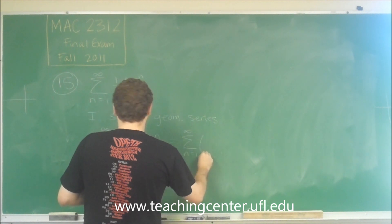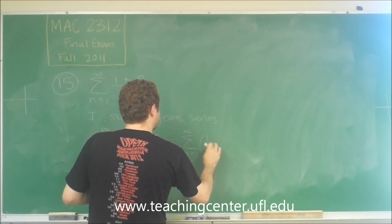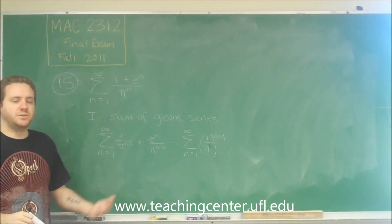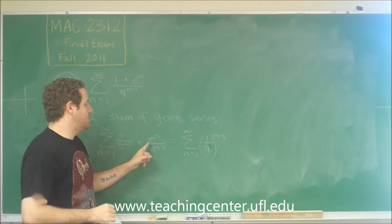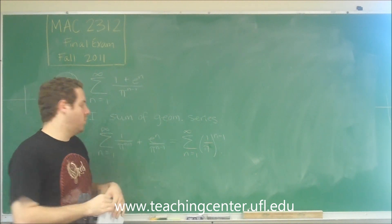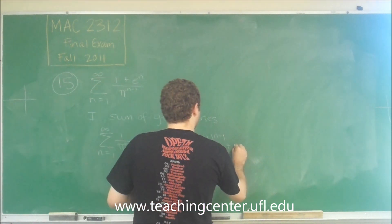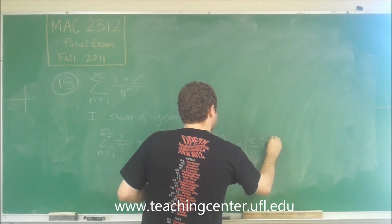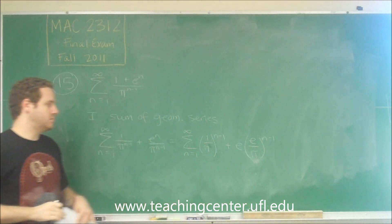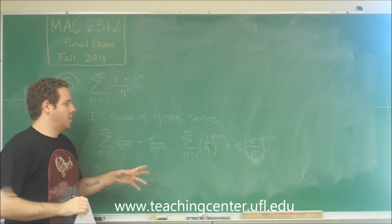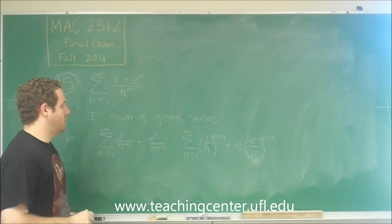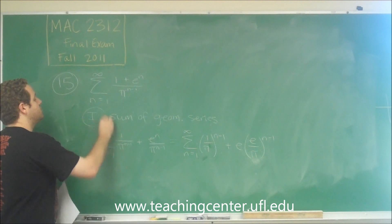We could just consider this one to be 1 over pi to the n minus 1. That's clearly a geometric form. This one is e to the n so we'd have to take out one e. But after that it could be e over pi to the n minus 1. Remember you need to have the powers equal to do that with it. So this is a geometric series, this is a geometric series. So this is a sum of geometric series, that is true.